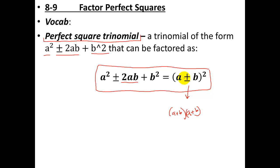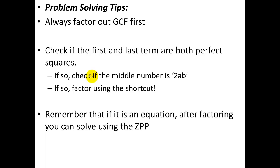If you have a perfect square — meaning the first number squared, the second number squared, and the middle is twice the product of a and b — you can rewrite it in factored form. This is something you need to recognize, but you can also think of it as normal factoring where you get the same thing twice. As with all factoring sections, always factor out the greatest common factor first. If you miss one, you'll end up with a problem that's much harder than it should be.